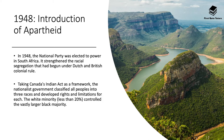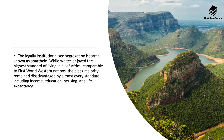1948 was a very important year in South Africa because this was essentially the year where the introduction of apartheid really became far more prevalent. The National Party was elected to power in South Africa, and it strengthened the racial segregation that began under Dutch and British colonial rule much earlier on. The nationalist government, which was essentially all white, classified all peoples into three races and developed rights and limitations for each. The white minority, less than 20% of the South African population, controlled the vastly larger black majority. This meant that while whites enjoyed the highest standard of living in all of Africa, comparable to first world western nations, the black majority in South Africa remained disadvantaged by almost every standard, including income, education, housing, and life expectancy.